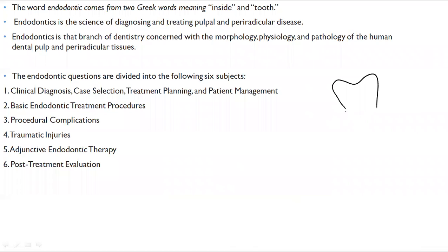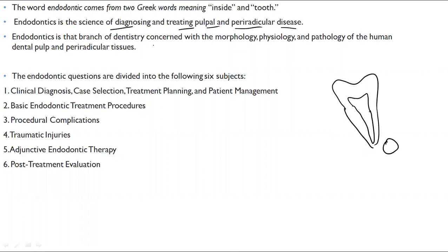Endodontics is the study inside the tooth — the diseases that can occur inside the tooth — and it also deals with periradicular diseases. It is the science of diagnosing and treating pulpal and periradicular disease. It is a branch of dentistry concerned with the shape, morphology, physiology, function, and pathology of the dental pulp and periradicular tissues.